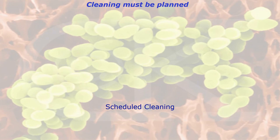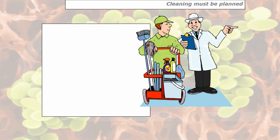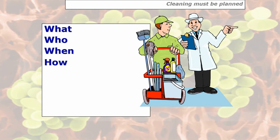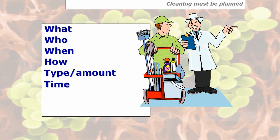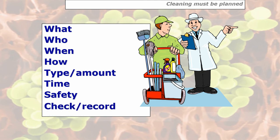There is another type of cleaning called scheduled cleaning. This is where cleaning is planned over a period of time. The cleaning schedule — which would be a poster or notice — would say what needs to be cleaned, who cleans it, when it's going to be cleaned, how it's going to be cleaned, the type and amount of chemical to use, the contact time, and for safety reasons what personal protective clothing to wear. It must all be checked and recorded by the line manager or supervisor, with a space for the person doing the cleaning to sign to confirm it's been done. You may have noticed this in toilets in supermarkets and service stations.